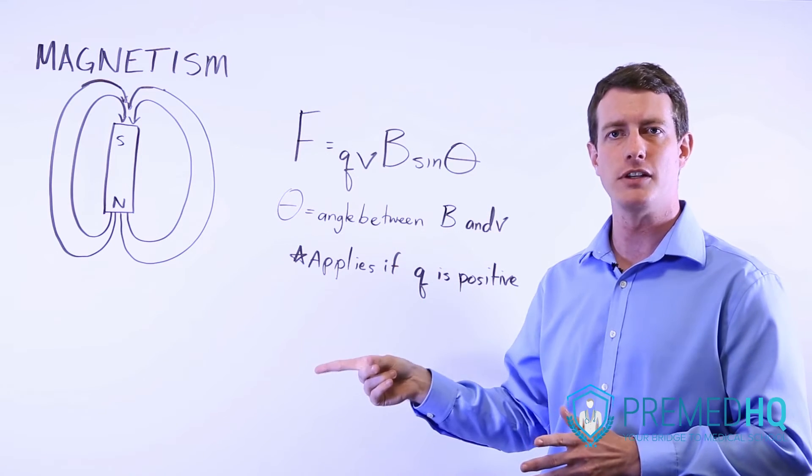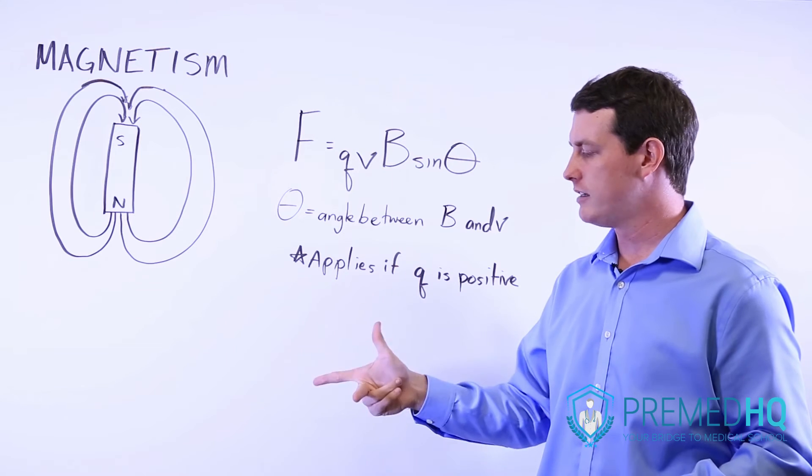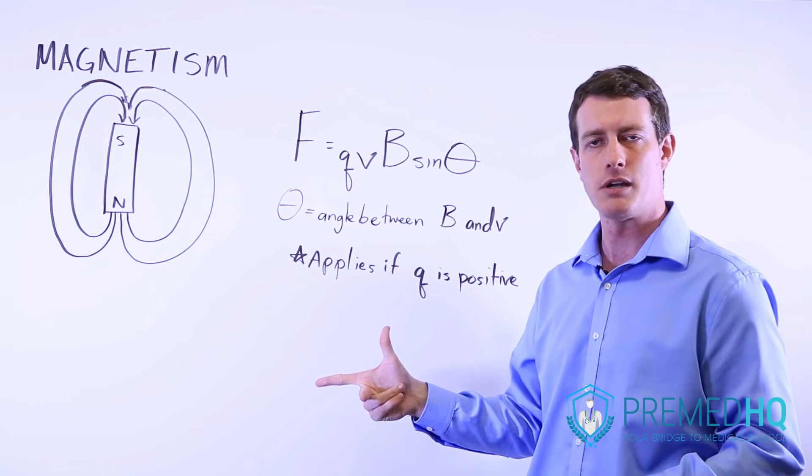Your index is the magnetic field in its direction. Your middle finger is where the force goes, and your velocity is being represented by your thumb.